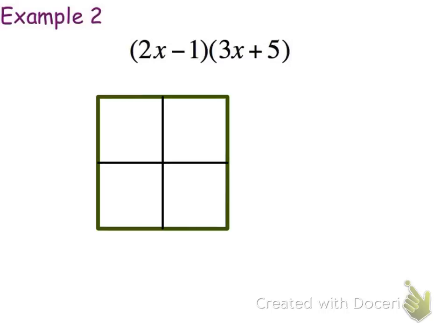We'll go ahead and along the bottom there. We'll write the 2x. And that minus with the 1 is going to be brought with the 1. Don't forget that minus 1. The 3x plus 5 along the top. So that's step 1. Step 2 remember is to multiply to get the insides.